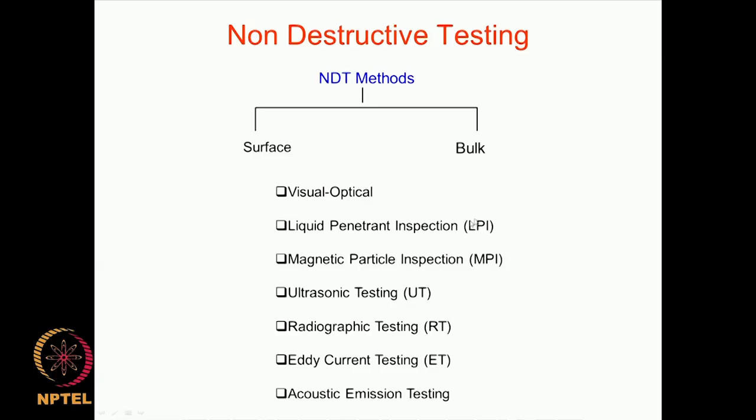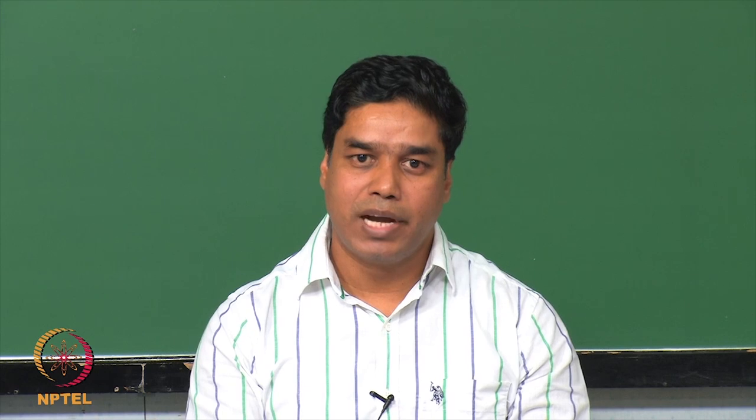If you want to examine what is lying beneath — that means below the surface or in the bulk of the component or material which is not visible to the naked eye — then this particular technique cannot be used. That is why, in the strict sense, we are not listing this as an NDT method. If you want to examine defects in the bulk, you need to use actual NDT methods, which can make visible indications of defects and flaws that are either on the surface, subsurface, or in the bulk of the material.